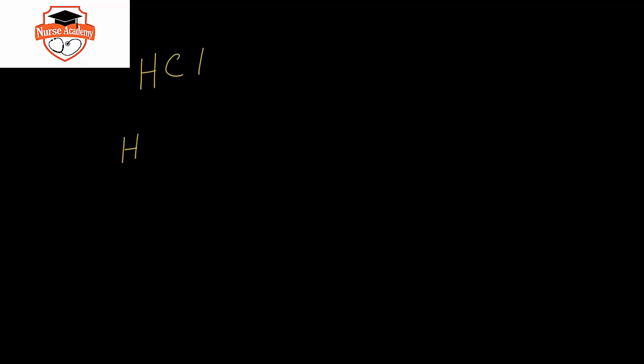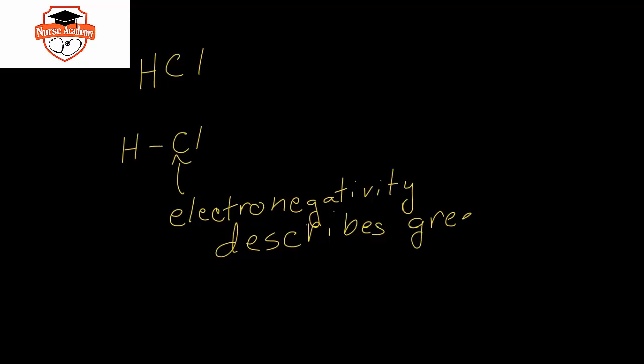For instance, with hydrochloric acid, the hydrogen chloride covalent bond, because chlorine is very electronegative, and electronegativity is a term that describes greediness of electrons. When the electronegativity difference between a hydrogen or one atom and another atom is very, very large, as it is in hydrochloric acid, then your greedier atom, in this case chlorine, is going to actually take the majority of the electron density.